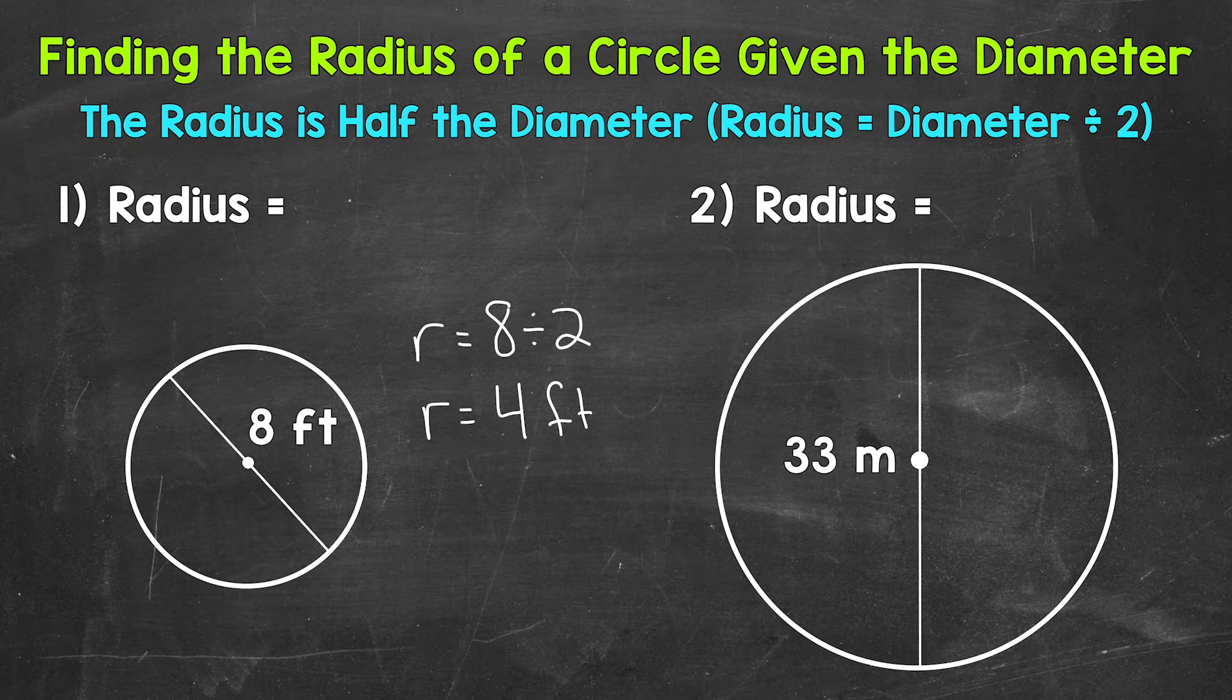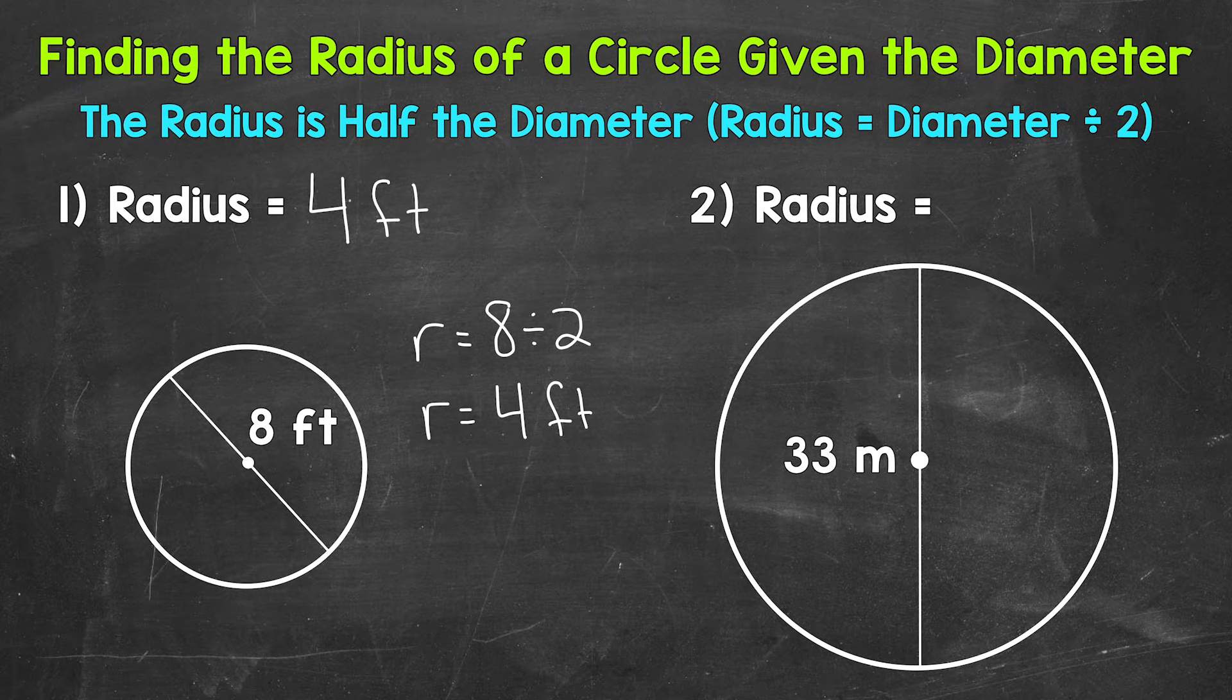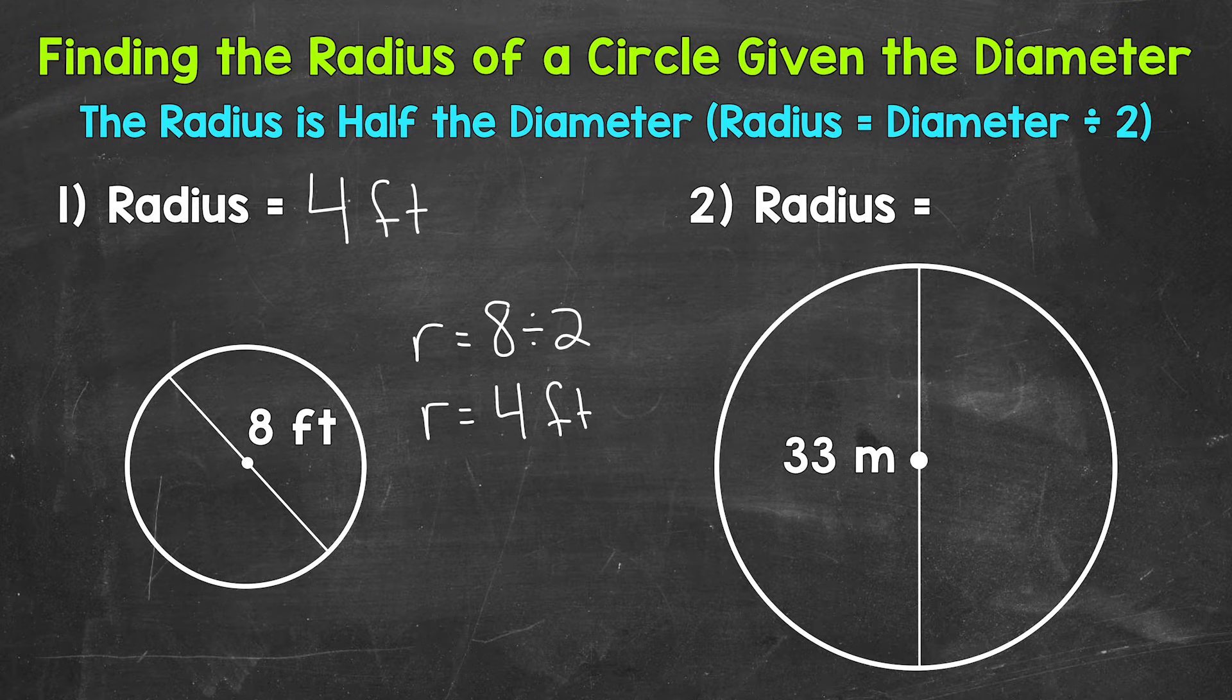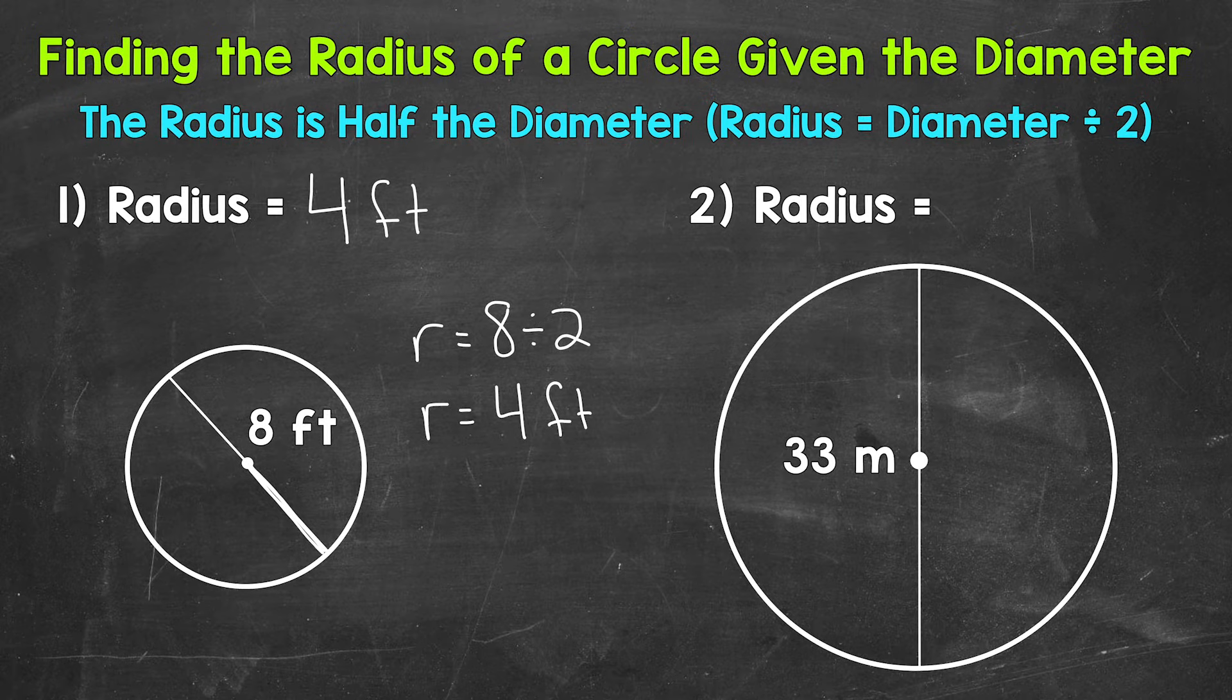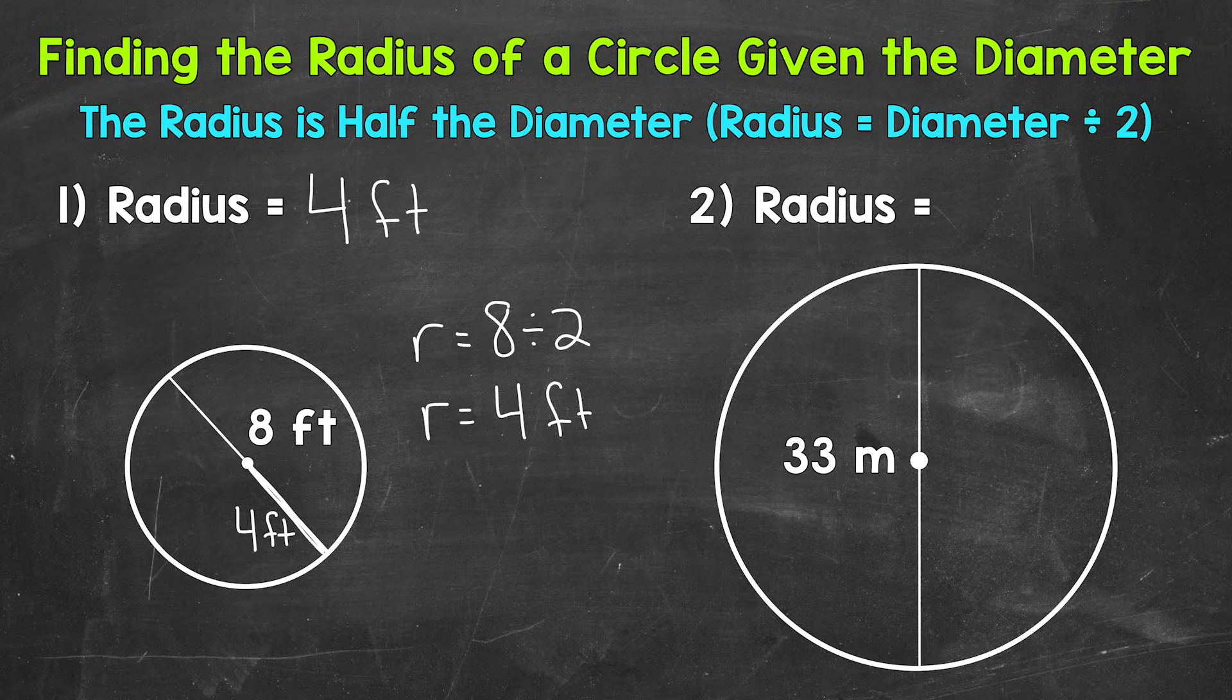So I'll write that up top as well. Radius for number one equals four feet. So as far as our circle for number one, we can go from the center of that circle to this point on the circle, and that's going to give us an example of a radius. And the radius for number one, like we talked about, is four feet.